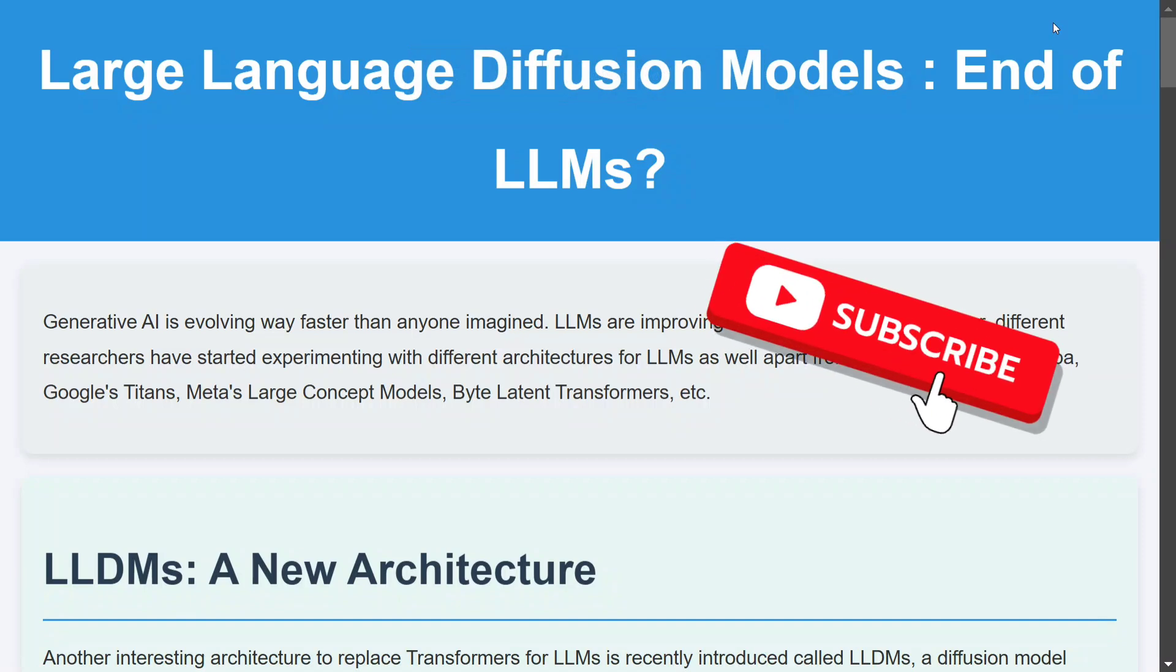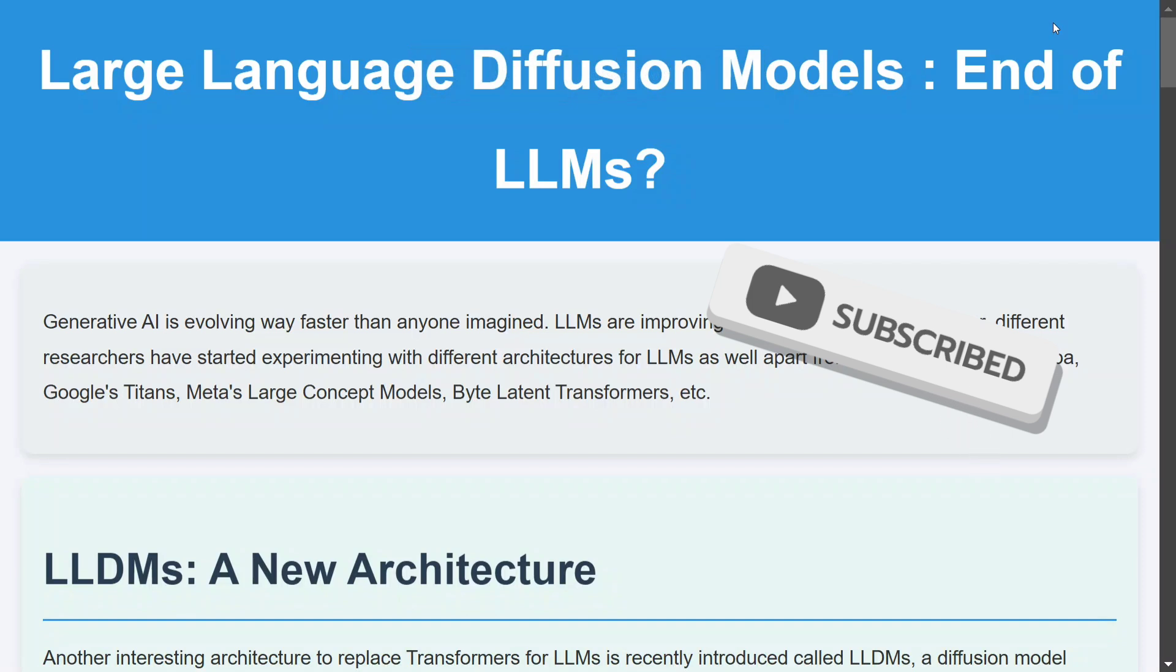You might be hearing a lot about diffusion transformers, but this time the paper introduces that diffusion architecture can now be used for language generation as well, text generation for LLMs. This is what the paper has attempted.